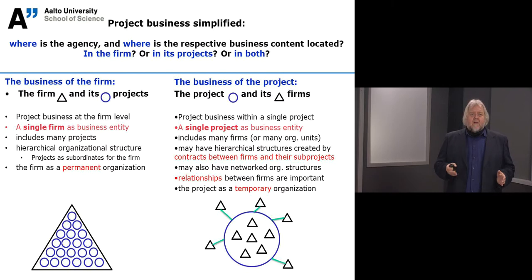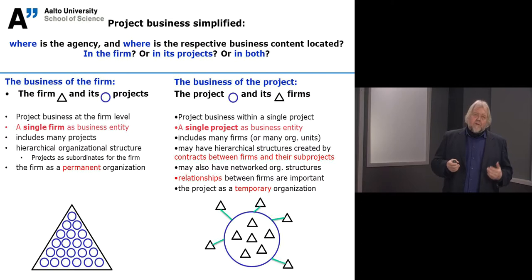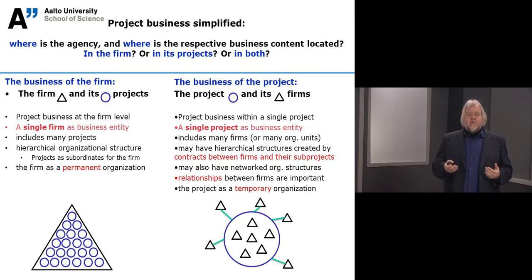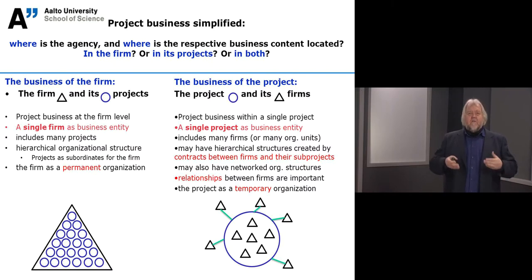Look at the left side of this picture. The firm is illustrated as a triangle and its projects are illustrated as circles or bubbles within the firm's organization — within the triangle. So the single firm can be considered as a business entity and it can include many projects. Normally the structure is hierarchical, so the projects are subordinates to the firm.